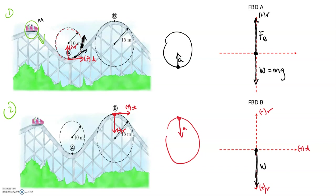Now, which way is the normal force pointing? The normal force is still the force that the track is applying to the cart, so it's pointed upwards — the cart is on the track and the track pushes upward. Now we need to determine the magnitude of this normal force. We know we need an acceleration in the positive R direction, which is downwards here. So the magnitude of the normal force needs to be smaller than the weight force, so that we have a net force in the downwards or positive R direction.